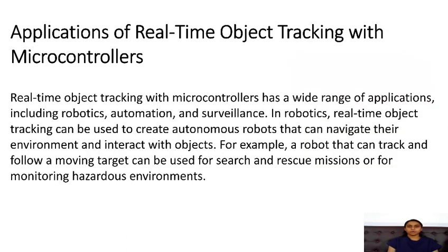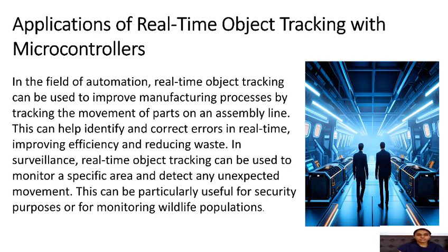Application of real-time object tracking with microcontrollers. This technology has a wide range of applications including robotics, automation, and surveillance. In robotics, real-time object tracking can be used to create autonomous robots that can navigate their environment and interact with objects. For example, a robot that can track and follow a moving target can be used for search and rescue missions or for monitoring hazardous environments. In automation, real-time object tracking can improve manufacturing processes by tracking the movement of parts on an assembly line, helping to identify and correct errors in real-time, improving efficiency and reducing waste.